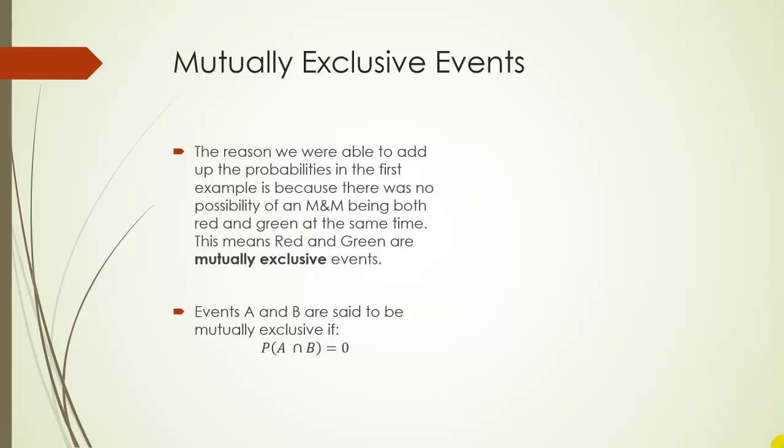So what's going on here? Why were we able to add up the probabilities in the M&M example, but we couldn't do it in the dog and cat example? The issue is that the M&M example events were mutually exclusive. So this is just another term for you. Mutually exclusive means that you can't be both. In other words, an M&M can't be both red and green at the same time.